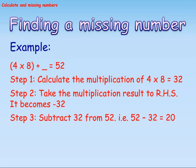Finding a missing number. Example: Step 1 - Calculate the multiplication of 4 into 8, which equals 32. Step 2 - Take the multiplication result to the right hand side; it becomes minus 32. Step 3 - Subtract 32 from 52, that is 52 minus 32 equals 20.